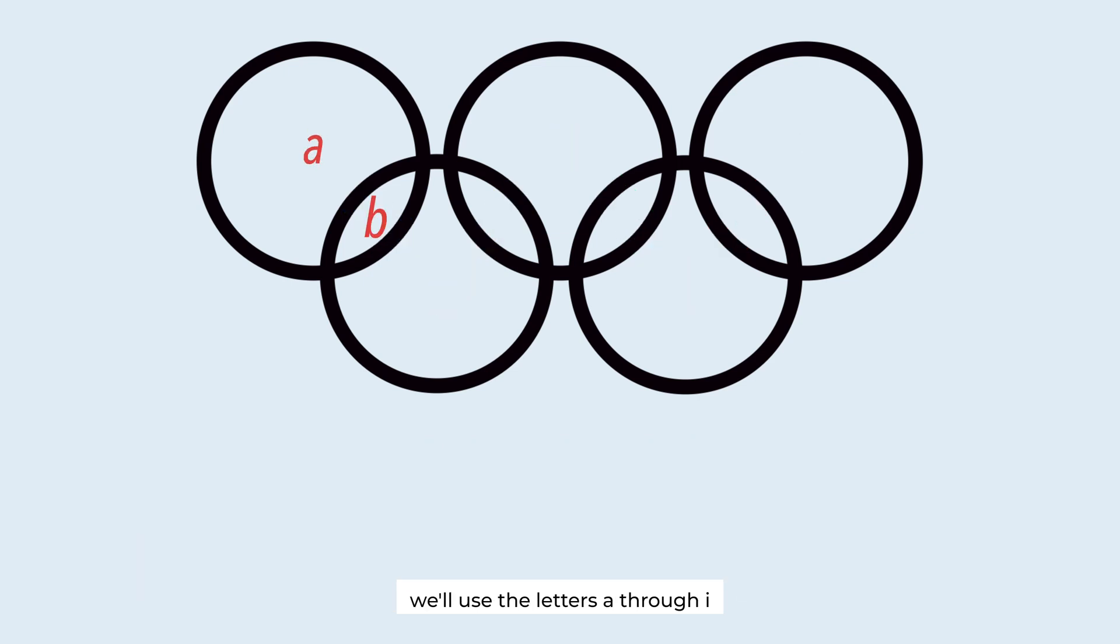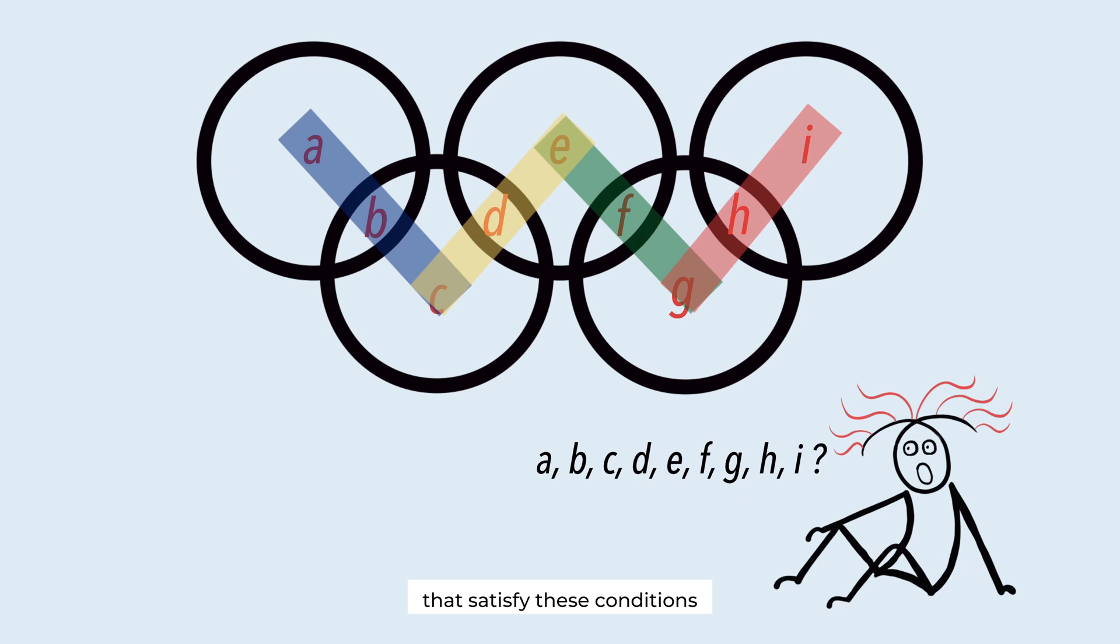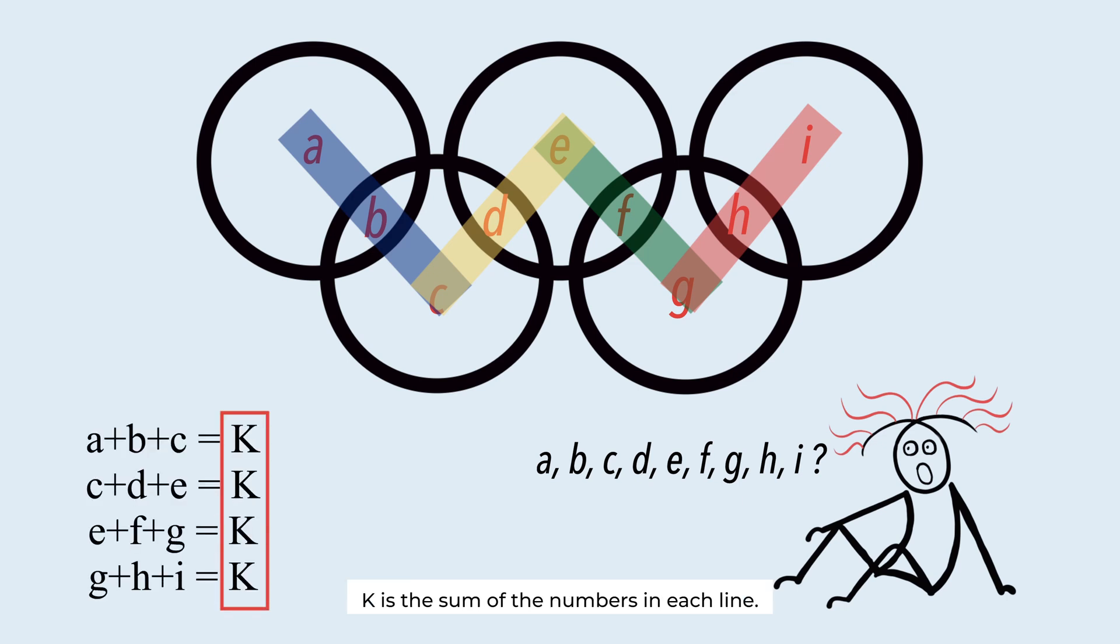We'll use the letters A through I to represent the number in each area. Our goal is to find the values of these letters that satisfy these conditions. K is the sum of the numbers in each line.